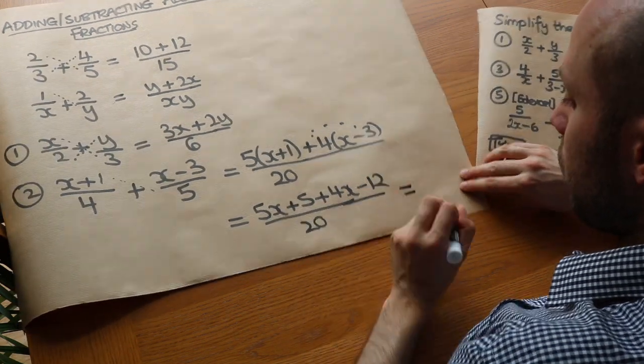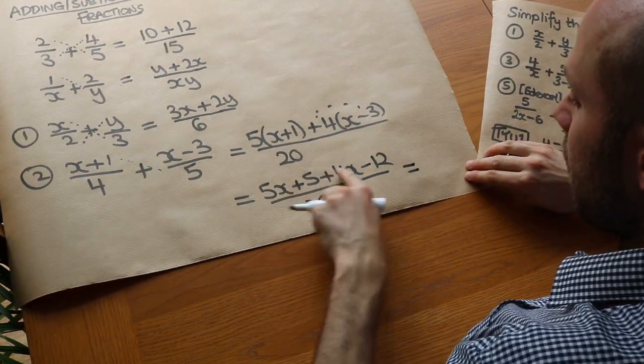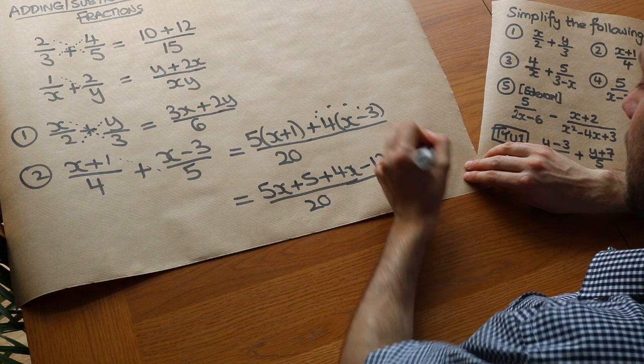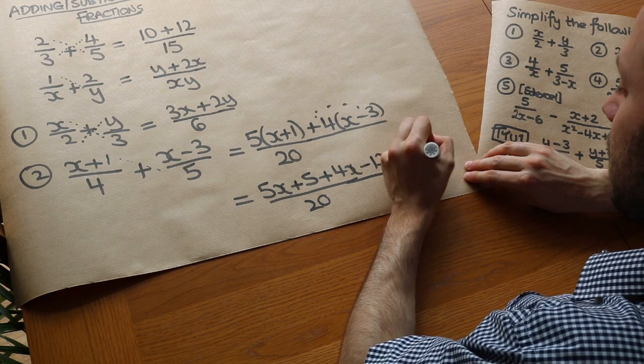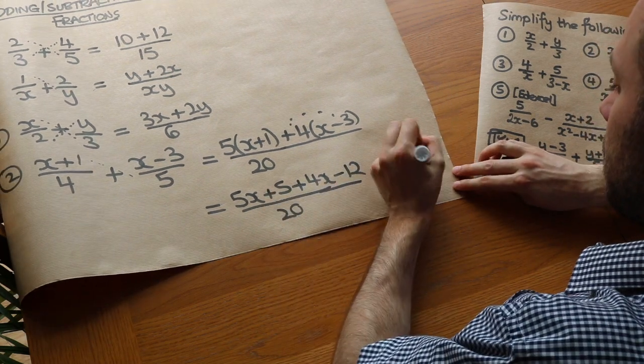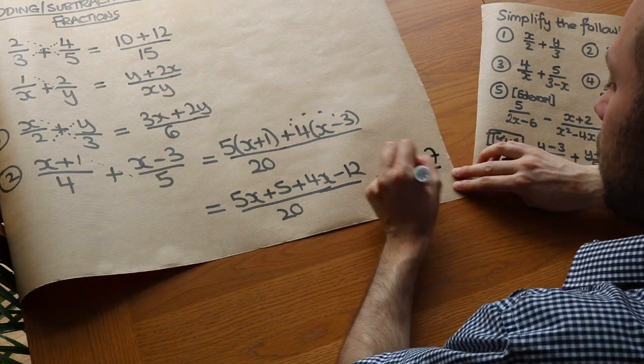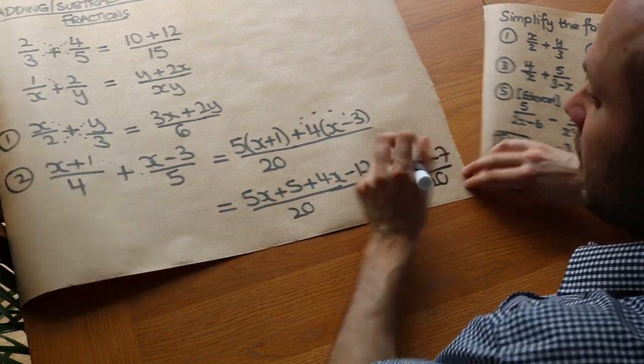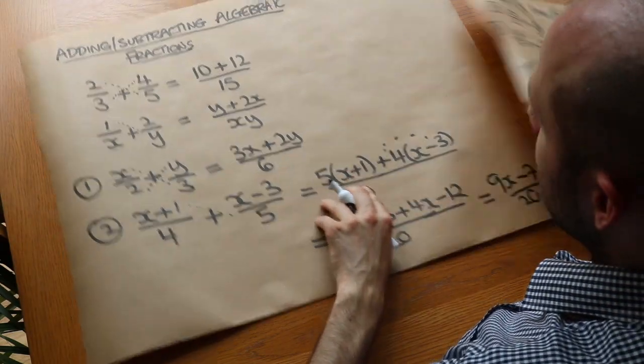And that is equal to — well, 5x plus 4x collects to give 9x, and then we've got 5 minus 12, which is minus 7, all over 20.